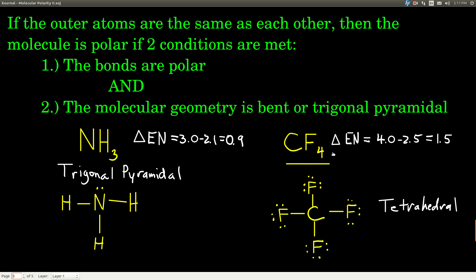Carbon tetrafluoride has outer atoms that are all the same. The difference in electronegativity is 1.5 (4.0 for fluorine, 2.5 for carbon), so the bonds are polar. However, when we draw the Lewis structure, there are four electron groups on the central atom with zero lone pairs, giving a tetrahedral geometry. Tetrahedral is symmetric, not bent or trigonal pyramidal, so this is a non-polar molecule.